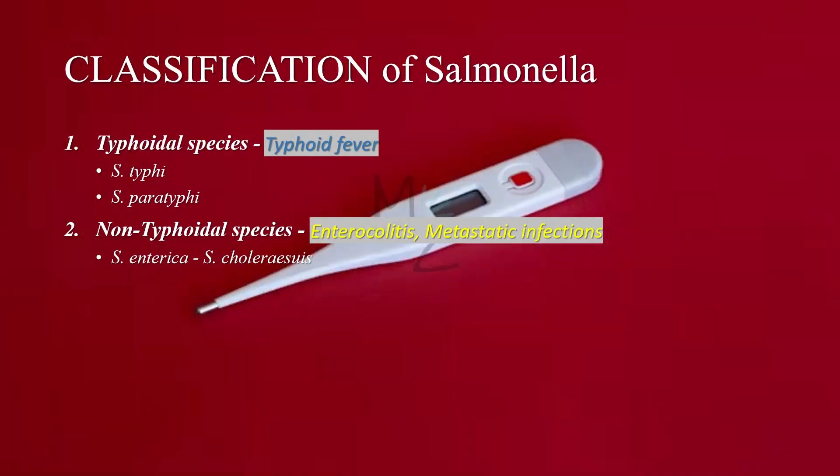Now let's look at the classification of Salmonella. Salmonella species are further classified into typhoidal and non-typhoidal species. Typhoidal species are responsible for causing typhoid fever, while non-typhoidal species cause diarrhea, enterocolitis, and metastatic infections such as osteomyelitis. The typhoidal species are Salmonella typhi and Salmonella paratyphi, while the non-typhoidal species are many serotypes of Salmonella enterica, which includes Salmonella choleraesuis.